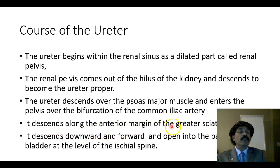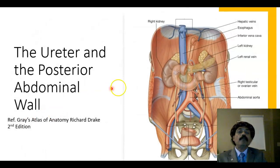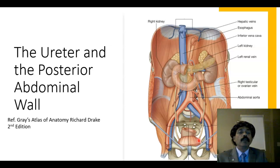The ureter descends along the anterior margin of the greater sciatic notch, then descends downwards and forwards, opening into the base of the bladder at the level of the ischial spine. Here we can see one ureter opening into the bladder beginning from the renal pelvis, and another one crossing the bifurcation of the common iliac artery, entering the base of the urinary bladder, forming two points of the trigone inside the bladder at the level of the ischial spine. The ureter passes over the psoas major muscle.